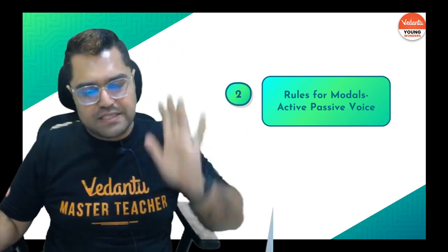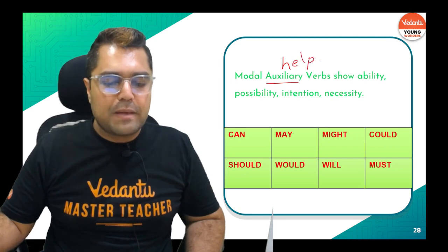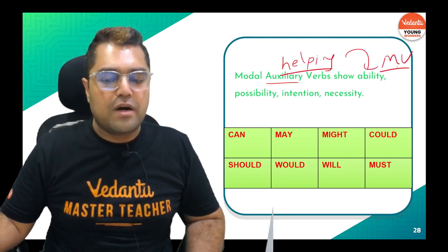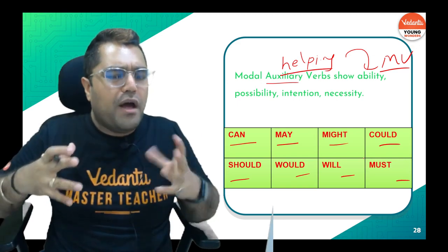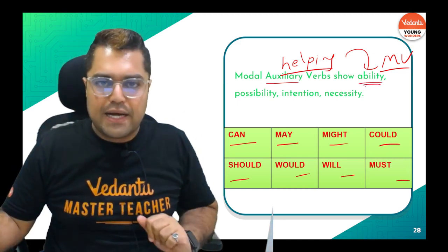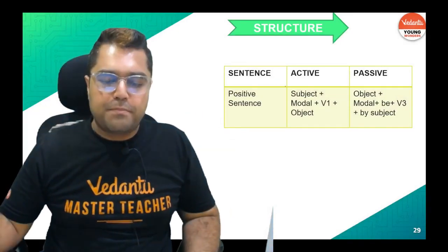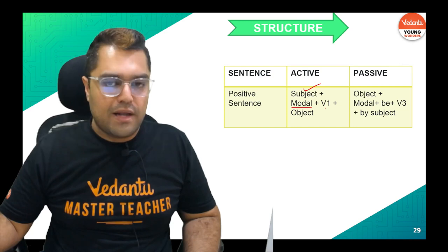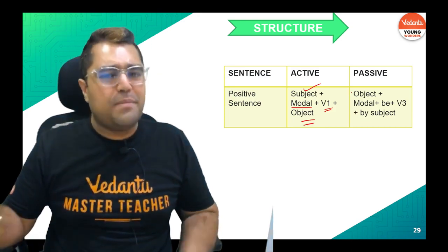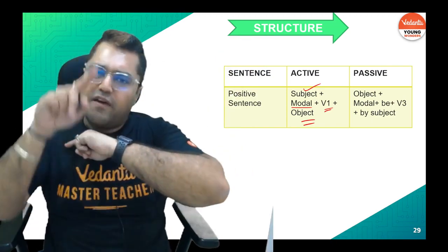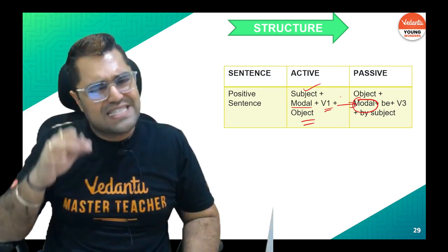Now the last rule of active and passive voice: modals. Modals are auxiliary (helping) verbs — they help the main verb. Modals include: can, may, might, could, should, will, must. Modals show ability, possibility, intention, or necessity. In a positive sentence: Subject + Modal + V1 + Object. When converting to passive: the object moves to the front, the subject moves to the back, and V3 is added. The modal stays the same.